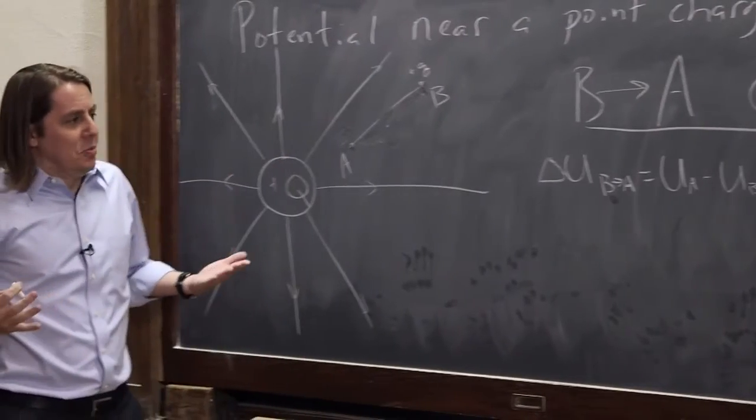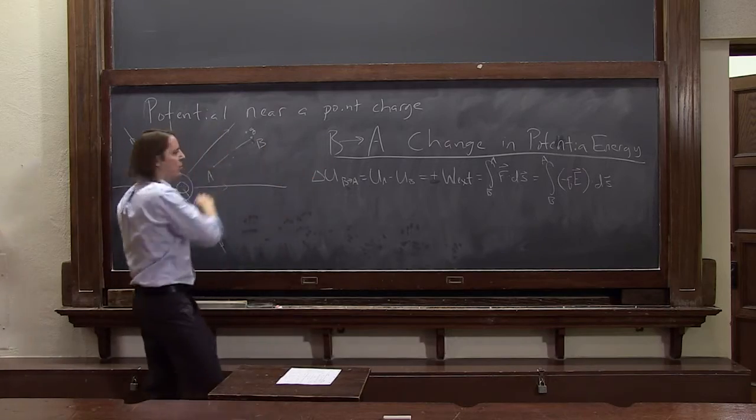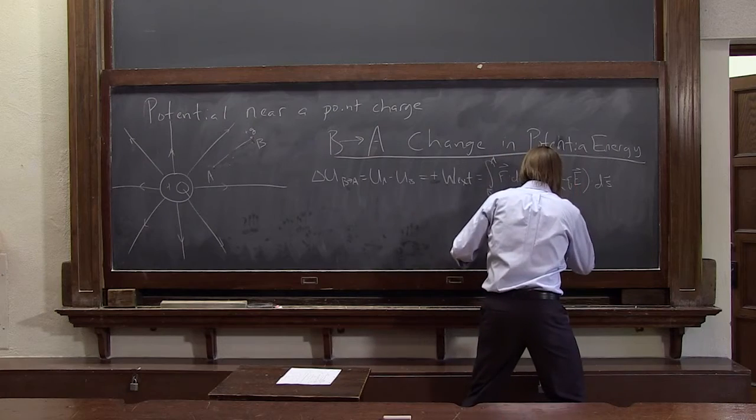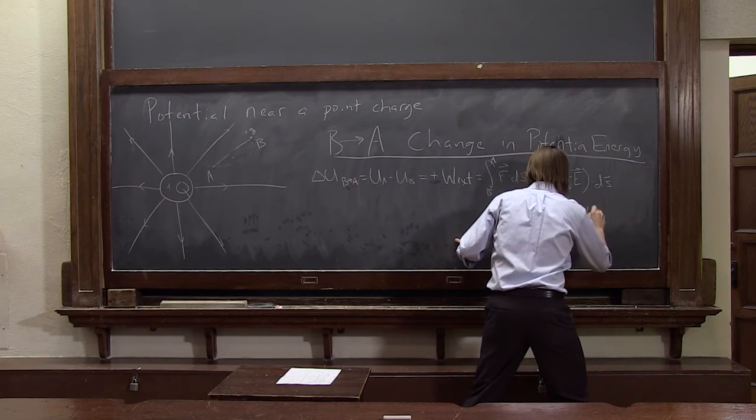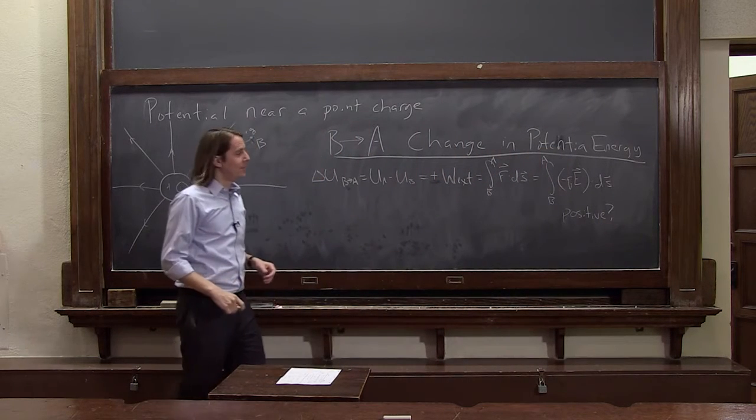So, let's see. Do we think that's right? Well, this delta U had better go up. This thing had better be positive. And it looks like it's negative. Right? We have a negative sign right here.